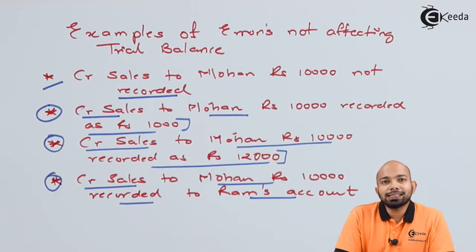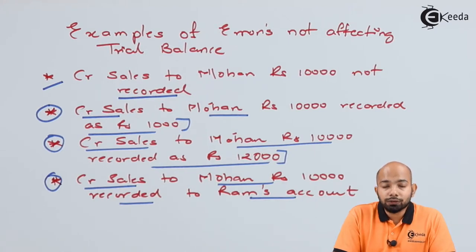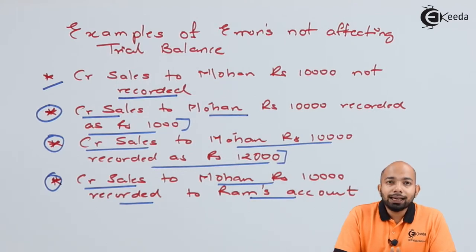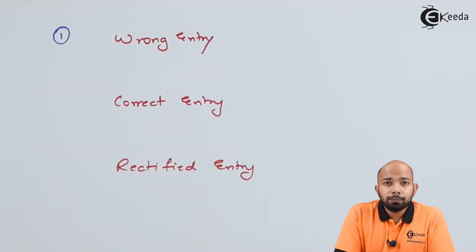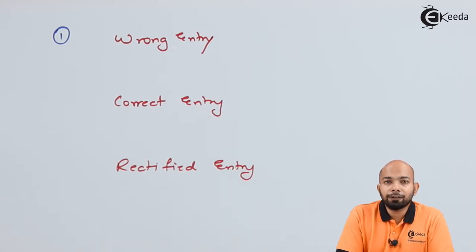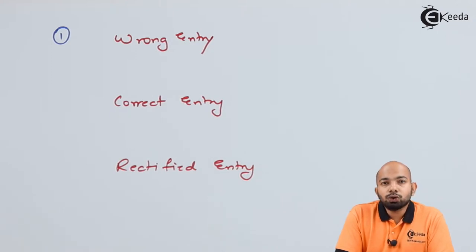Now that you have noted all these erroneous transactions, we need to understand how we can prepare rectification entries. Follow the three-step process and understand how a rectified entry needs to be passed. I've mentioned three columns: the first being the wrong entry, the second being the correct entry, and the third being the rectified entry. The rectified entry column will be boxed as that is the final answer required.